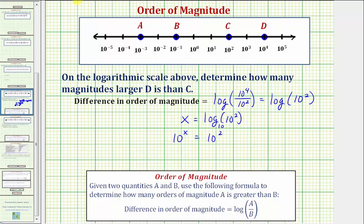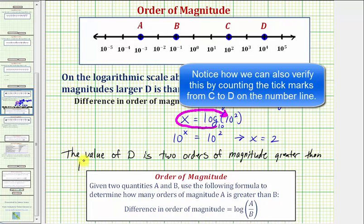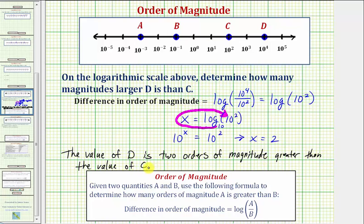Another way to form this exponential equation is to start with the base and work around the equal sign: ten to the x must equal ten squared. Now, because the bases are the same and these are equal, the exponents must be equal, and therefore x must equal two. This tells us the value of d is two orders of magnitude greater than the value of c, which means d is one hundred times larger than the value of c.